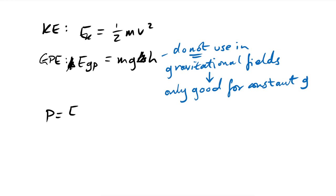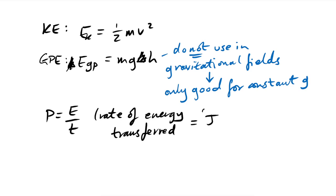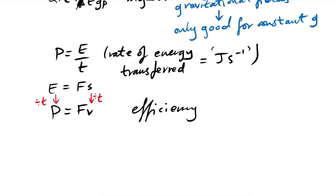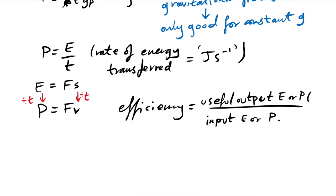P = Fv comes from the work done equation F×s divided by time on both sides, giving power = force × speed. Efficiency = useful output energy or power divided by total input, times 100 for a percentage.